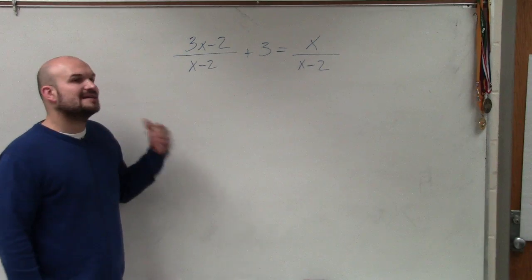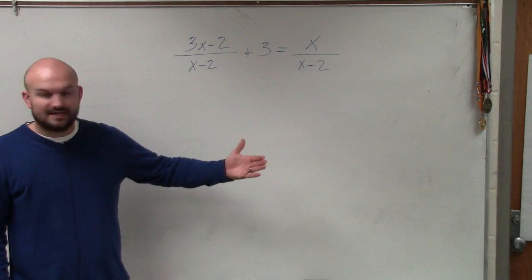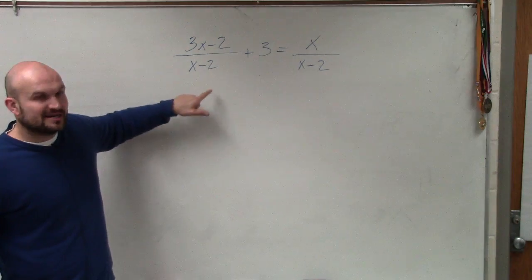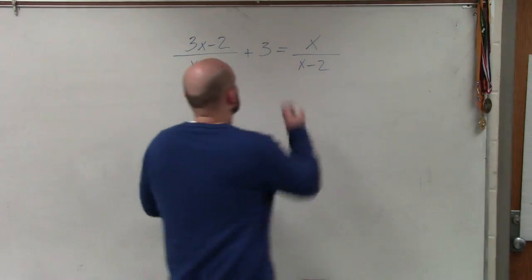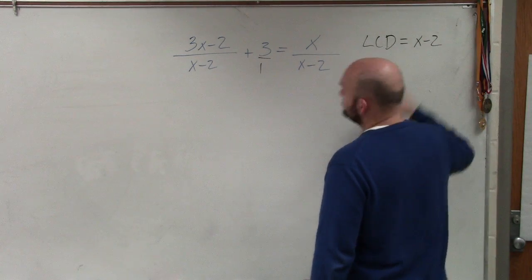So to get rid of fractions, what I'm going to do is I need to multiply every single term by the LCD. So I look at this expression. I see that the LCD is x minus 2, because that's really like over 1. So the LCD is just equal to x minus 2.